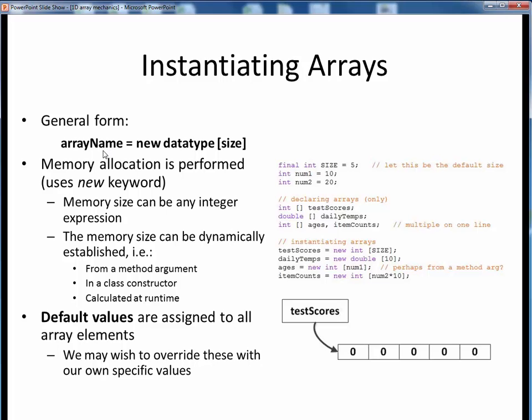We've already declared this array called array name. Now we're performing some actual memory allocation using the new keyword, a data type, and the desired number of array elements. This memory size can be any integer constant or expression, or it can be dynamically established from some method or constructor argument, or calculated at runtime.